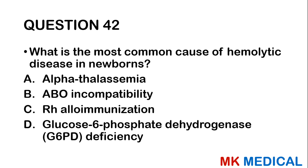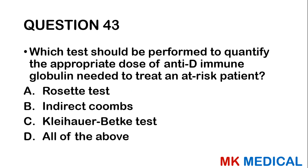Question forty-two: What is the most common cause of hemolytic disease in newborns? A, alpha thalassemia; B, ABO incompatibility; C, Rhesus alloimmunization; D, glucose-6-phosphate dehydrogenase deficiency. Most of you are going to scream C, but C is incorrect. The answer is B — ABO incompatibility.